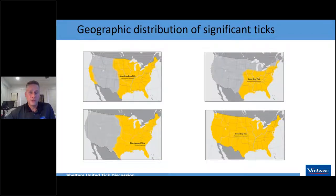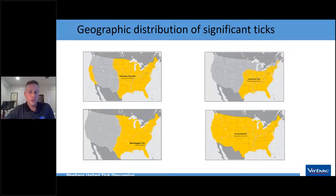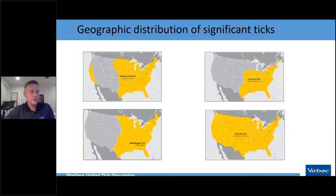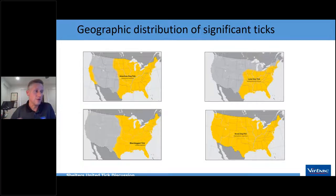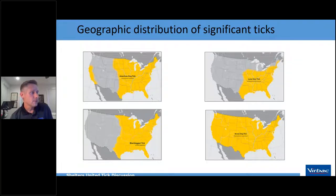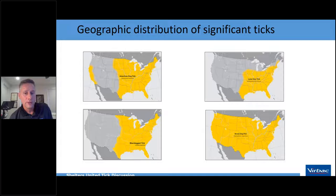Looking at geographic distribution: the brown dog tick is found in all 50 states because it can live indoors. The lone star tick is concentrated in the southeast up into Maine and the midwest. The American dog tick covers over half the US and into Canada. The black-legged tick (Ixodes) follows white-tailed deer populations — up into the Great Lakes, Maine, the southeast, and into Texas.